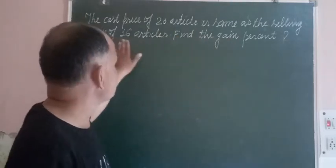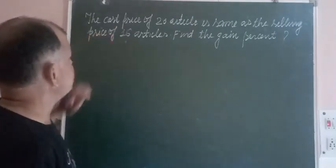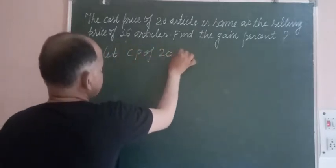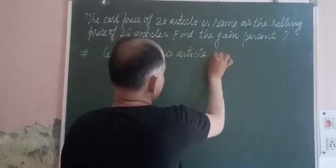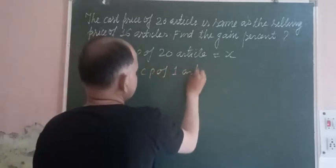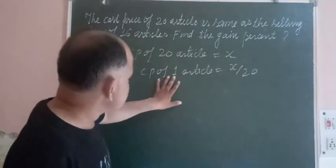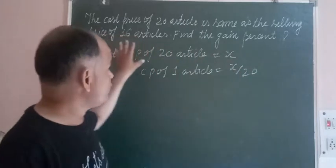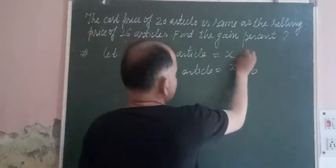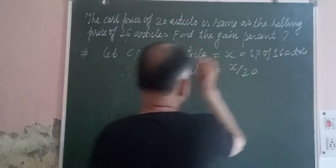Here, cost price of 20 articles — let CP of 20 articles equal to x. Therefore, CP of 1 article: we divide both sides by 20, so we get x upon 20. The CP of 20 articles is equal to the SP of 16 articles.